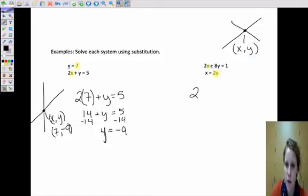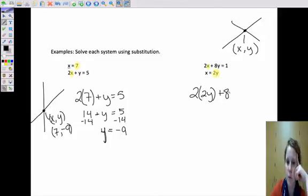Okay? So we're taking 2, and then instead of x, I'm going to write 2y because we know at this point, these two equations are the same. So this x is going to equal this x, and this x equals 2y, so this x is going to equal 2y. And now we have plus 8y equals 1.